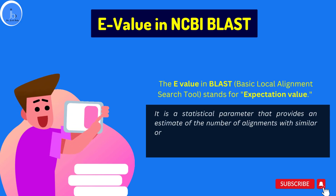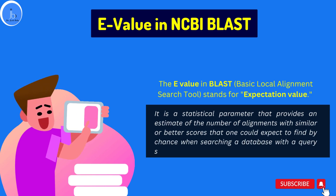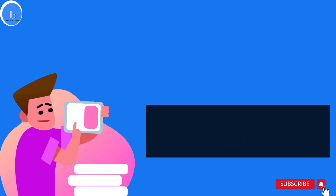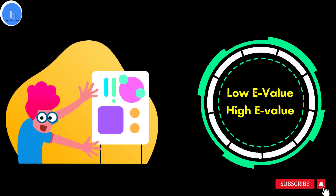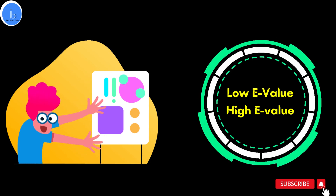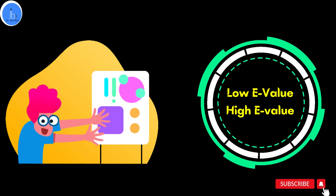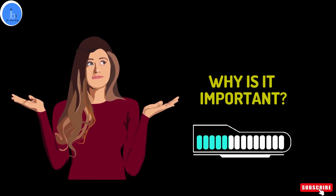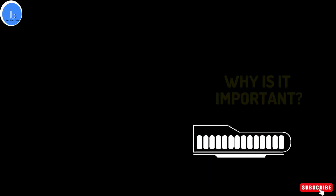It's a measure of how likely it is to find a match between two sequences just by random chance. A low e-value suggests a strong and significant match — like finding a real gem. But a high e-value is like stumbling upon something common, like a pebble on the beach.